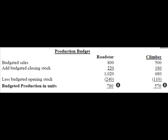Moving on from our sales budget to our production budget. The firm plans to sell 800 units of Roadstar and wants to have 220 units left at the end of the period, so it would be necessary to produce 1,020 units. But as we already have 240 units in stock at the start of the period, we need to produce only 780 units. The formula is: budgeted sales, plus budgeted closing stock, less budgeted opening stock.